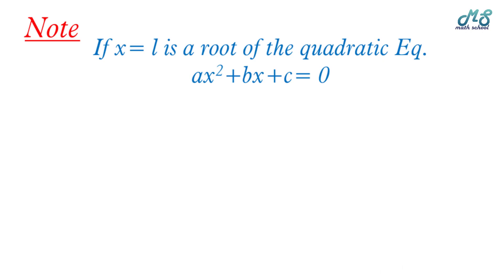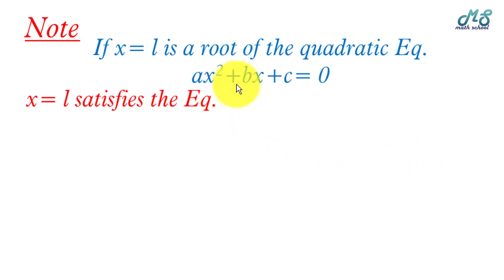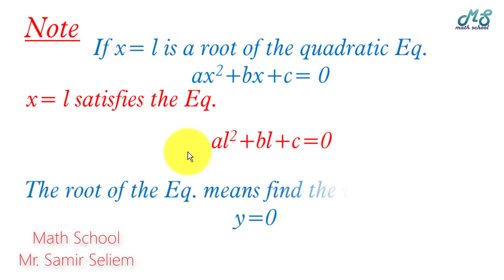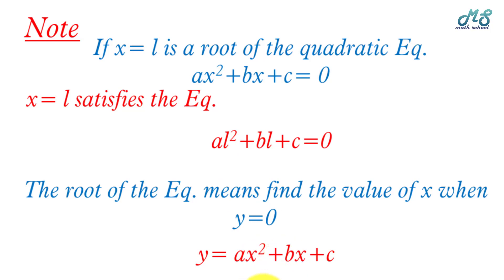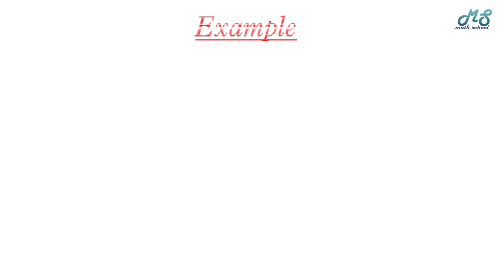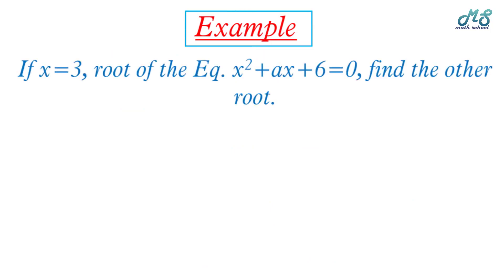Note: if x equals l is a root of the quadratic equation ax squared plus bx plus c equals zero, 'root' means a solution — x equals l satisfies the equation. Substituting, we get al squared plus bl plus c equals zero. The root of the equation means the value of x when y equals zero.